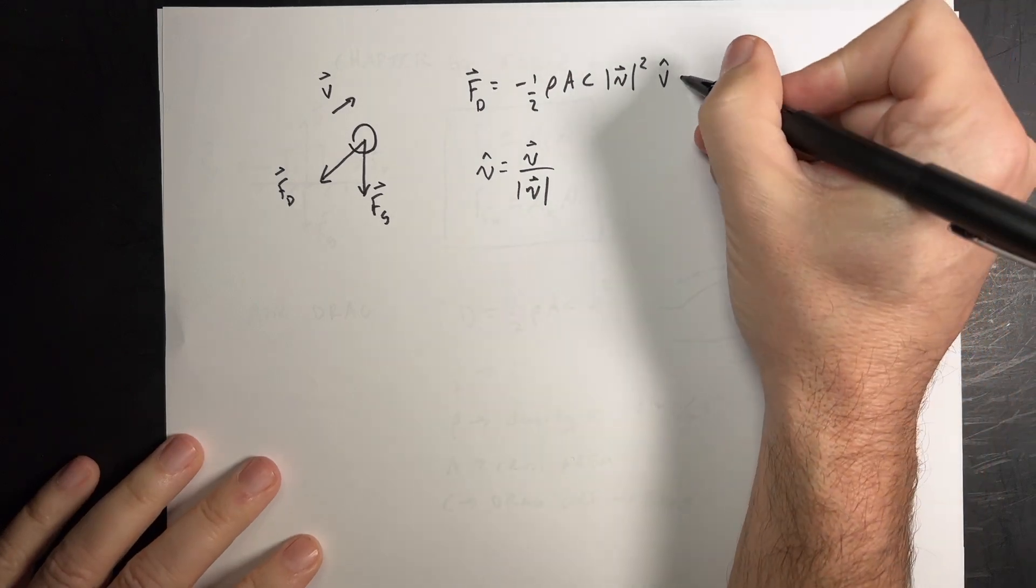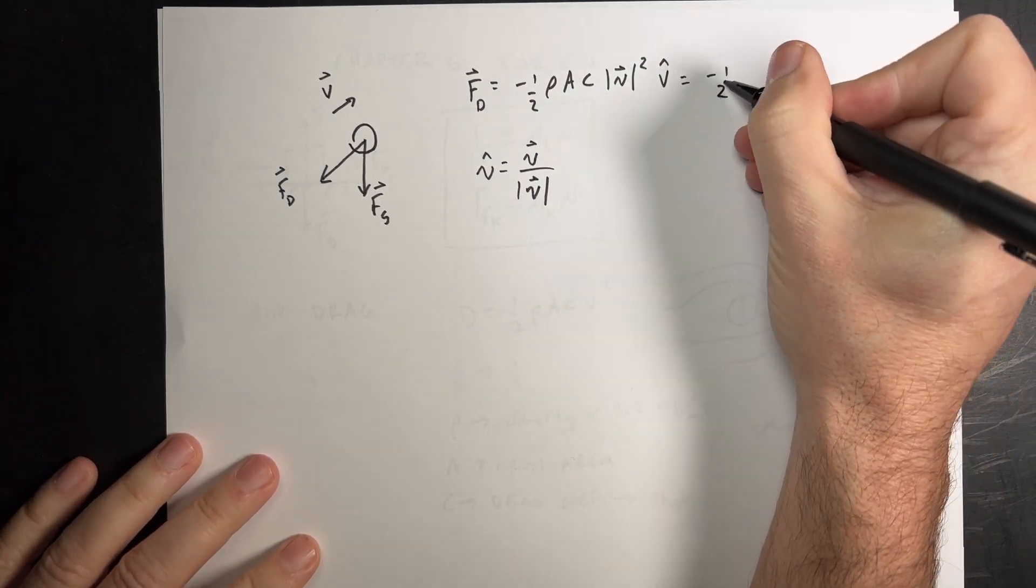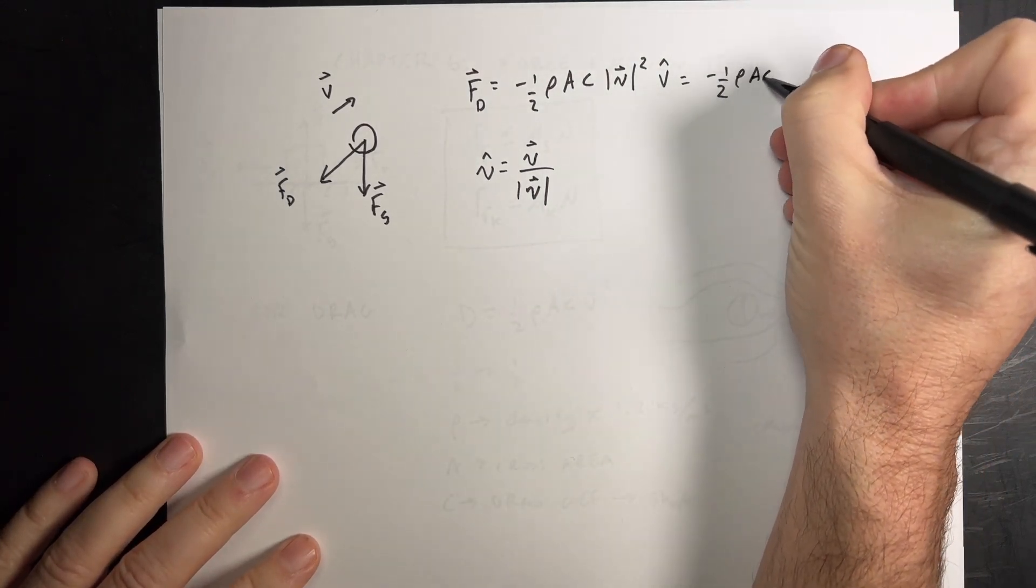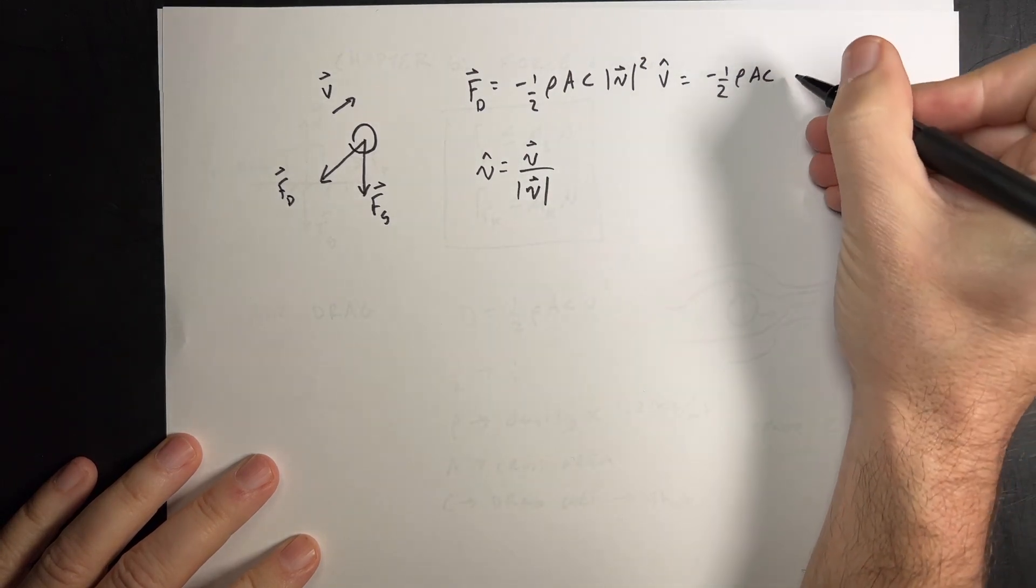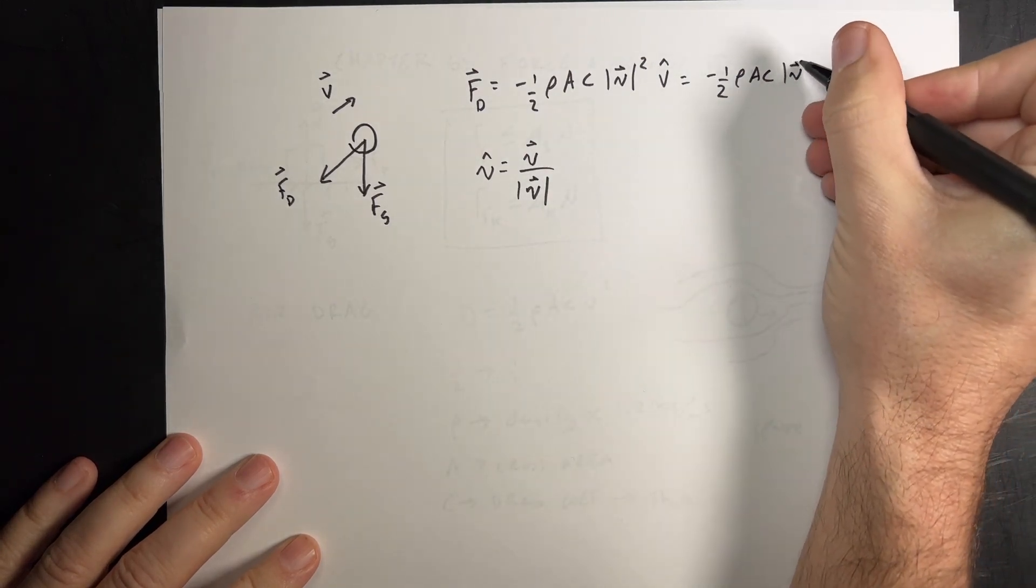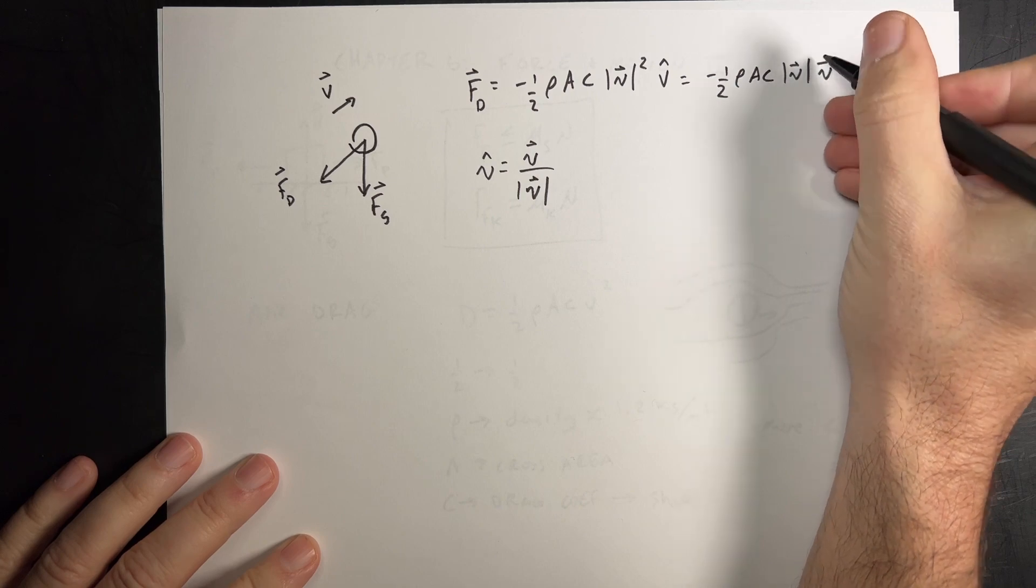So you could write this as negative one half rho AC. If I put in this for V squared, I get the magnitude of V times the vector V. It's the same thing.